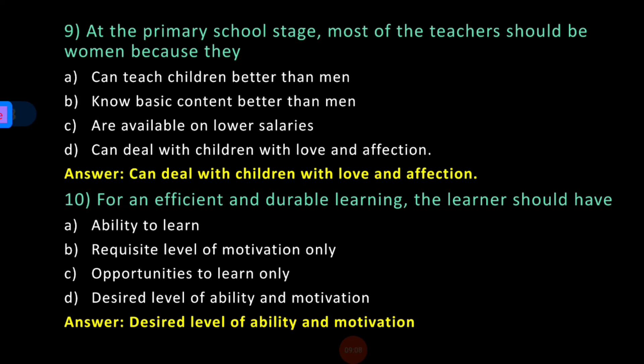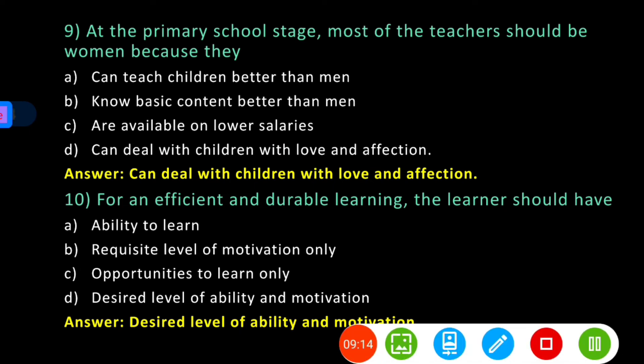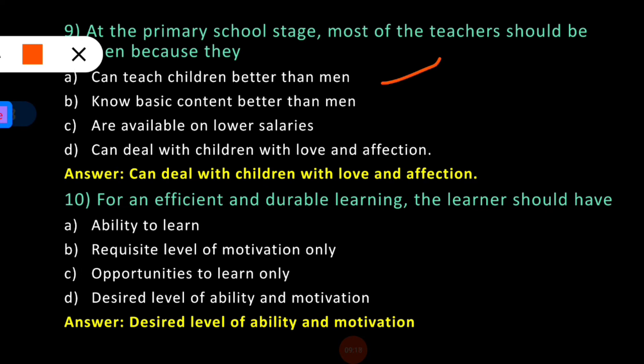Question nine: At the primary school stage, most of the teachers should be women because? Option A: they can teach children better than men. Option B: they know basic content better than men. Option C: women are available on lower salaries. Option D: they can deal with children with love and affection. Option D is the correct answer. At the primary school stage, most teachers should be women because they can deal with children with love and affection. This is a very easy but also tricky question.